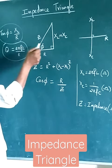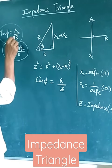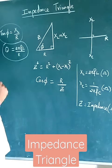So this can be easily remembered with the same triangle. Tan φ is equal to XL by R, where XL is equal to 2πFL. Thank you.